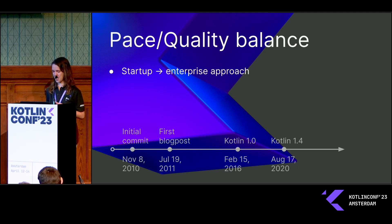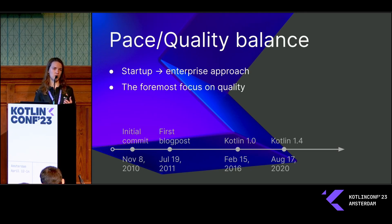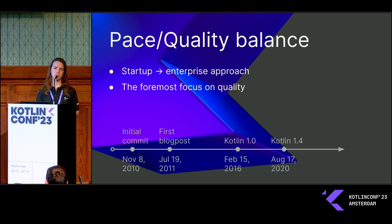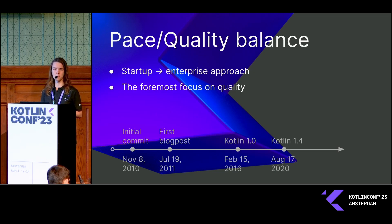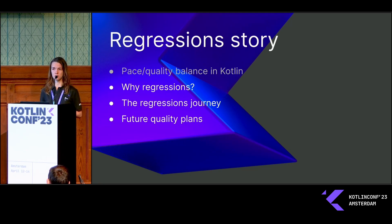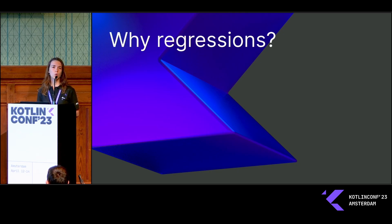We needed to be more predictable for ourselves as well, to continue to be more productive. We knew that not only we had changed — our users changed too. You were not only enthusiasts anymore; you were developers who use Kotlin as a tool, and when you use a tool you want it to be stable. This is how quality became the first and foremost priority of Kotlin.